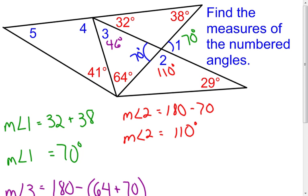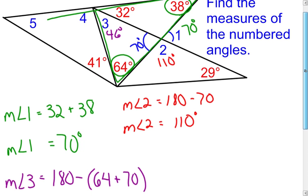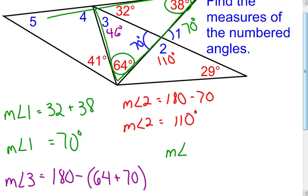Now I'm going to go to the measure of angle 4. I'll use the exterior angle theorem again, looking at angle 4 as an exterior angle of this triangle. I can add the two remote interior angles together: 64 plus 38 gives me the measure of the exterior angle.